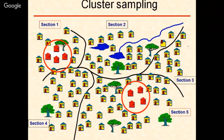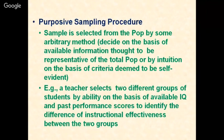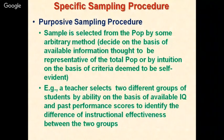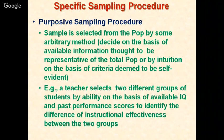In purposive sampling, the sample is selected from the population by some arbitrary method and decided on the basis of available information thought to be representative, or by intuition. For example, a teacher selects two different groups of students by ability based on available intelligence quotient scores or past performance scores, to identify the difference in instructional effectiveness between the groups. This introduces bias as we are not using a random method.